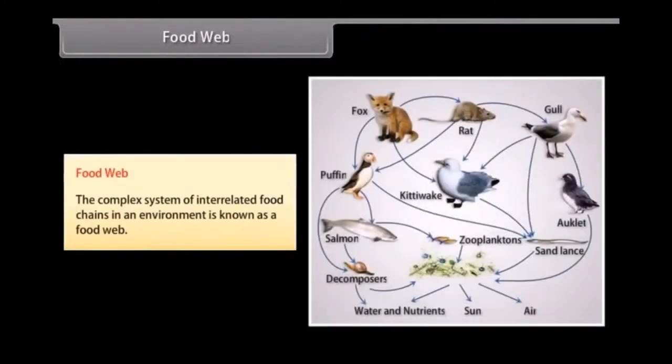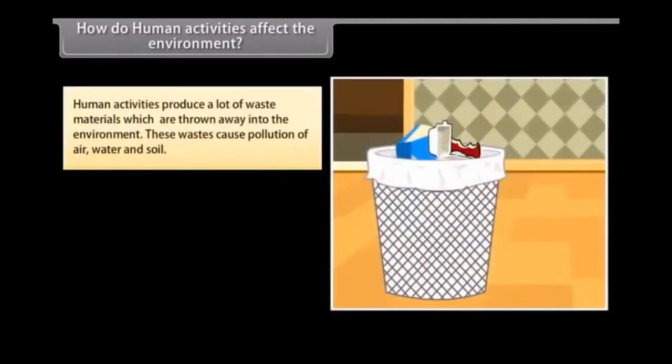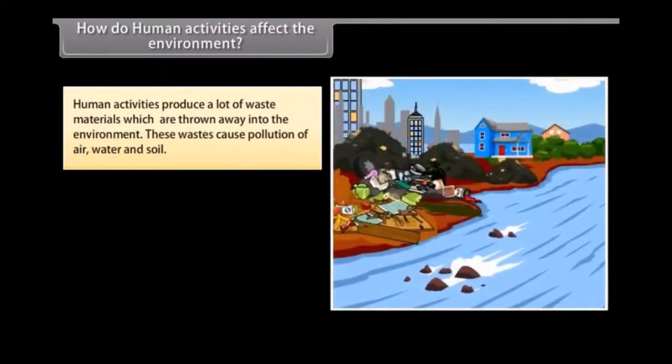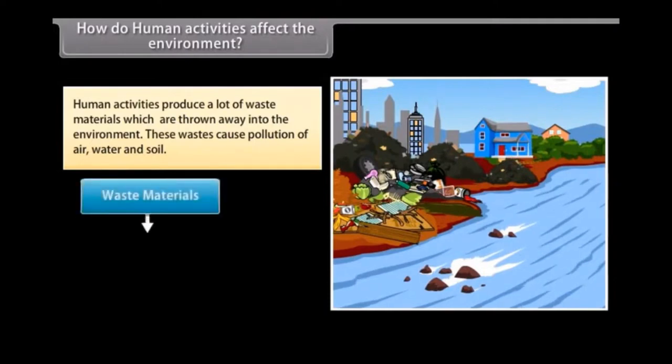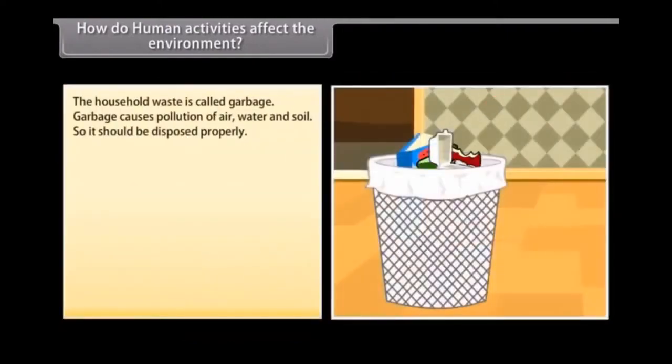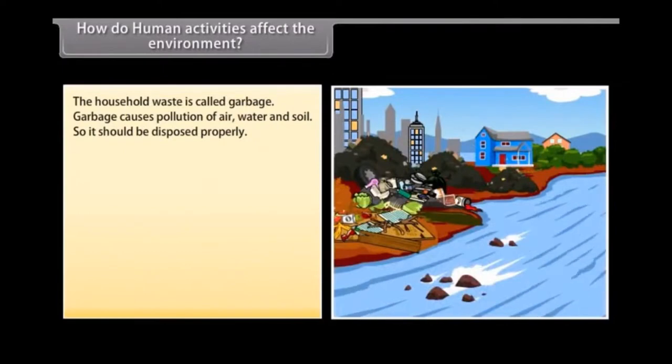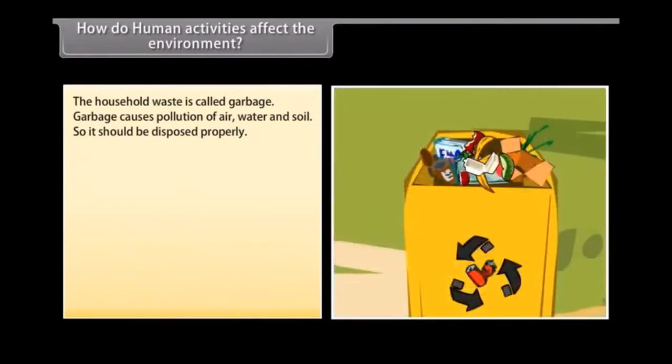Food web. The complex system of interrelated food chains in an environment is known as food web. How do human activities affect the environment? Human activities produce a lot of waste materials which are thrown away into the environment. These wastes cause pollution of air, water and soil. The waste materials produced are of two main types: biodegradable waste and non-biodegradable waste. The household waste is called garbage. Garbage causes pollution of air, water and soil, so it should be disposed properly.